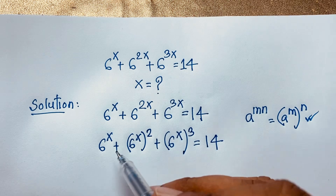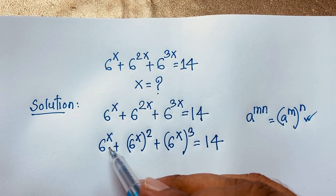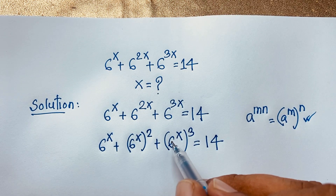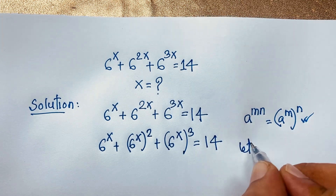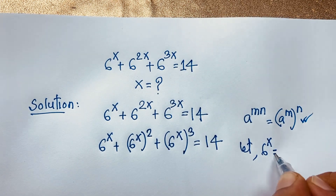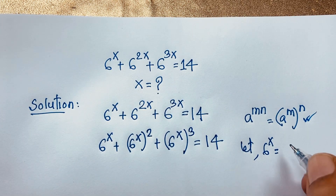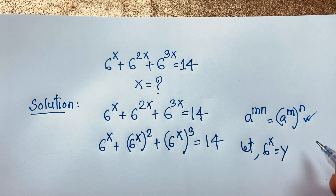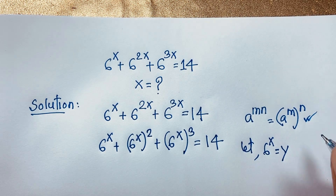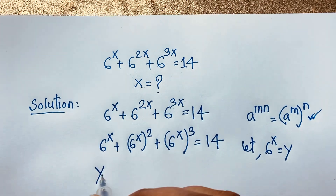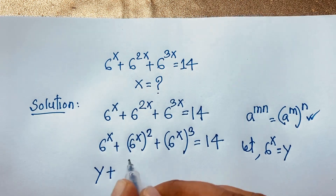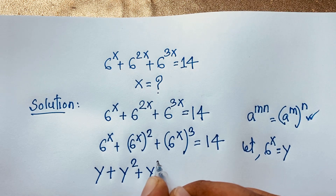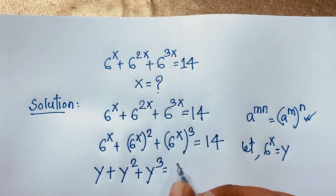Now you can see here we have 6 to the power x, 6 to the power x, and 6 to the power x in each term. So let 6 to the power x equal y. Then the expression becomes y plus y squared plus y cubed is equal to 14.